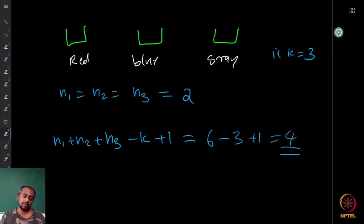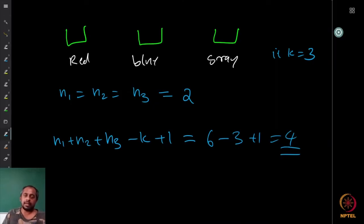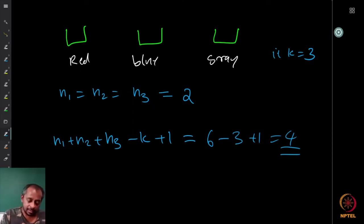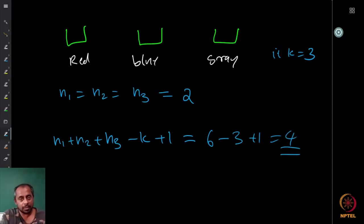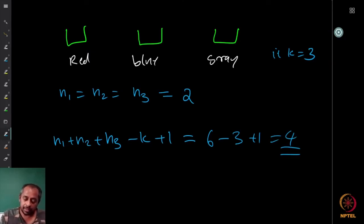So if you pick four socks, then definitely one of the colors will have two of them — there will be either two red, and if not, there will be two blue, and if not, there will be two gray. So we are now masters of the pigeonhole principle.